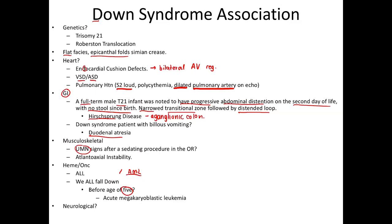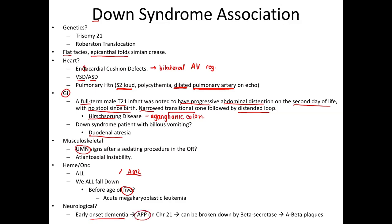Finally, neurologically — later down the road — Down syndrome patients have a predisposition to early onset dementia. That early onset dementia is due to the fact that they have three copies of the amyloid precursor protein (APP). With three copies from trisomy, there is more likelihood of APP being cleaved into A-beta plaques via beta-secretase cleavage, leading to more early onset Alzheimer's disease.